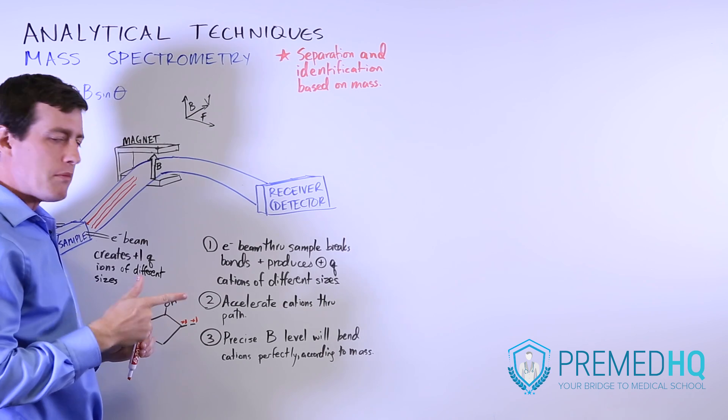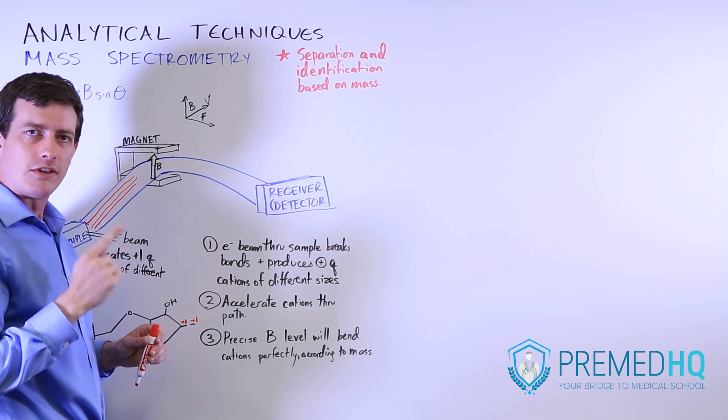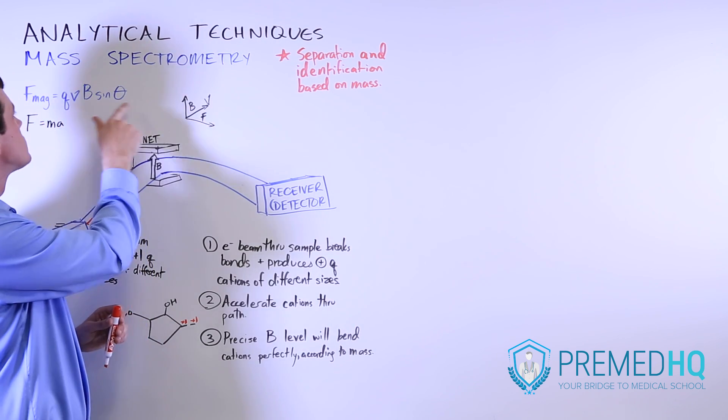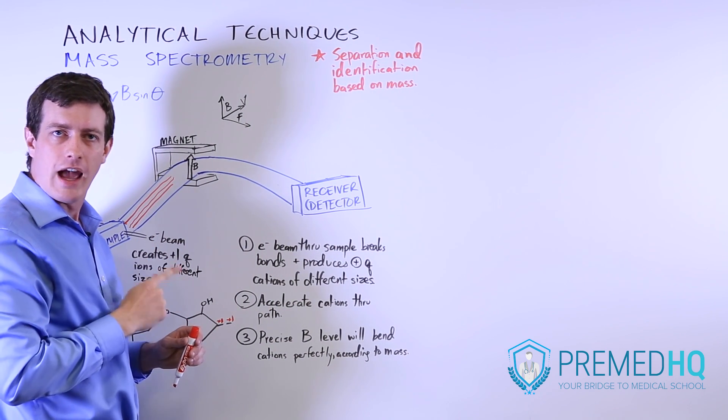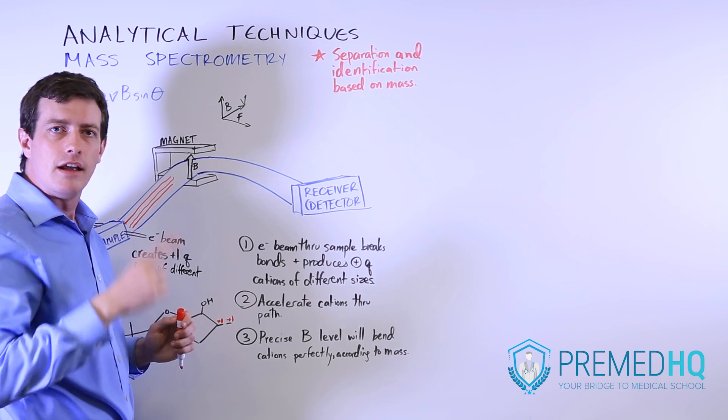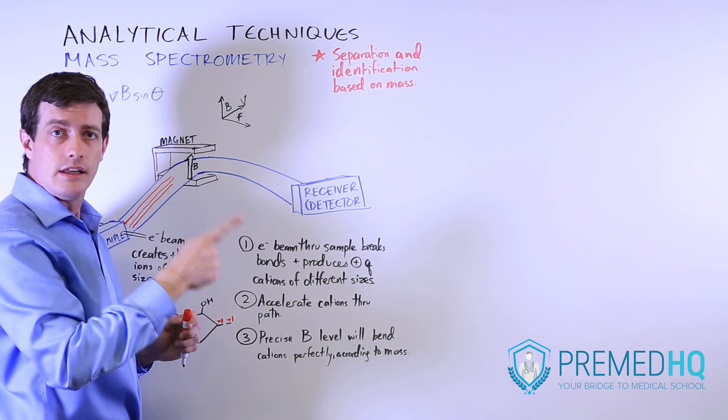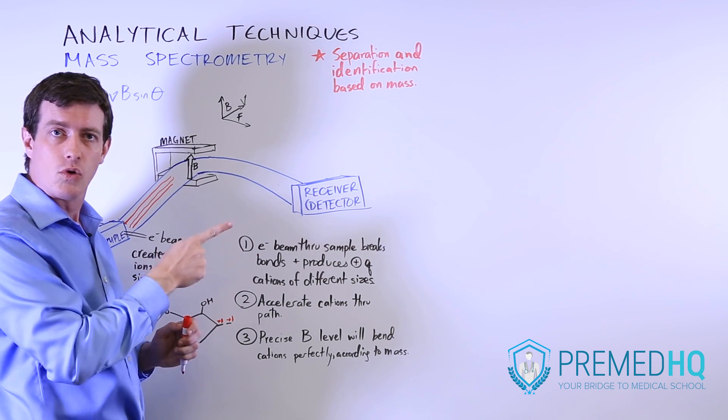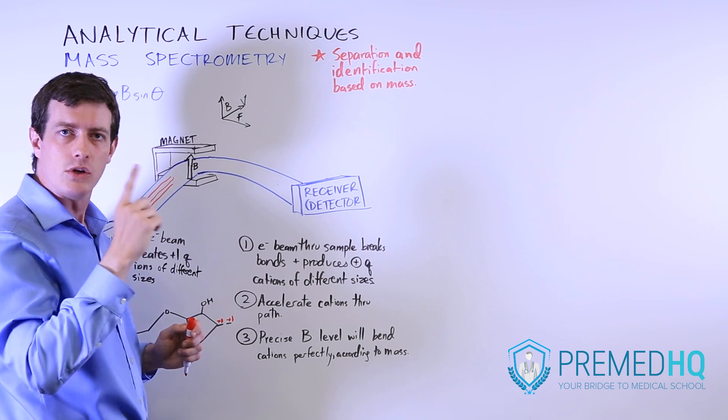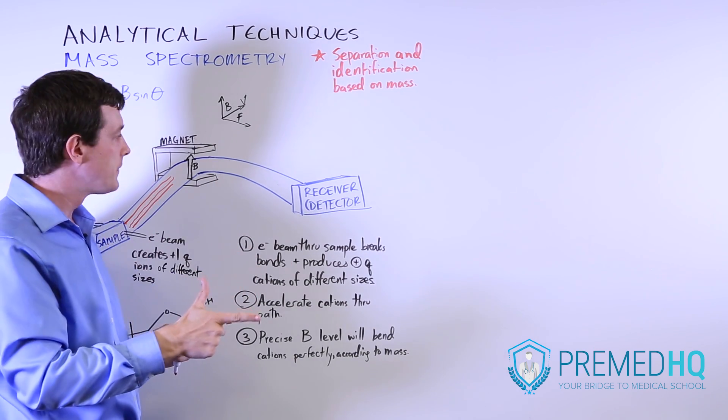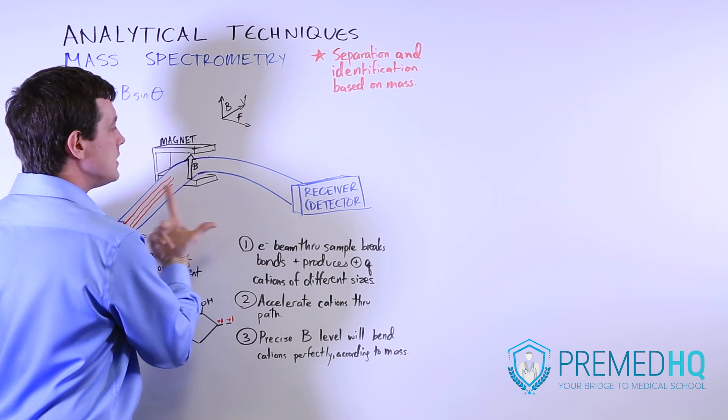To understand the physics of this, we'll go through how the right hand rule dictates the behavior of the plus one charged cations as they're traveling down. The right hand rule involves three components using this formula for the magnetic force: you have B, you have F, and you have V for the velocity. Index finger is B, the middle finger is F for the force, and the thumb is V for the velocity. So it's alphabetical order: B, F, and V.